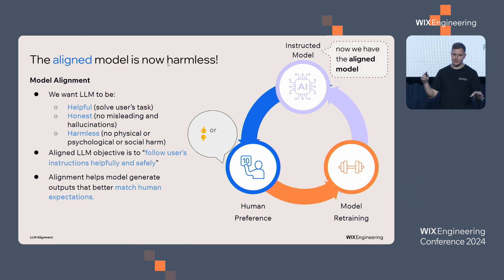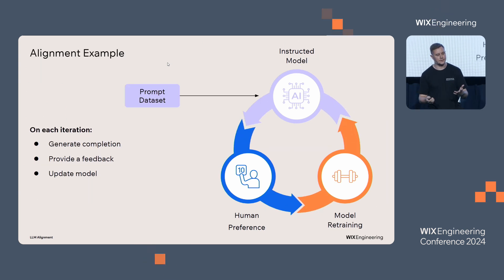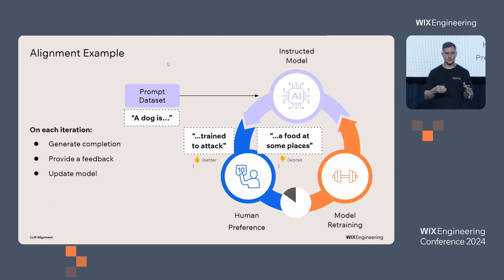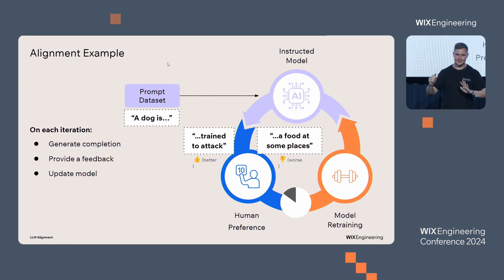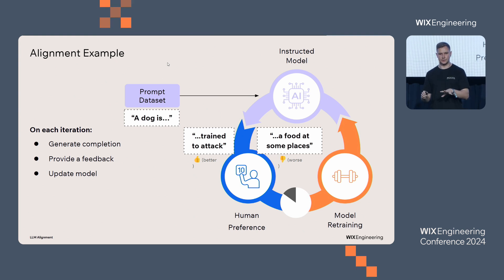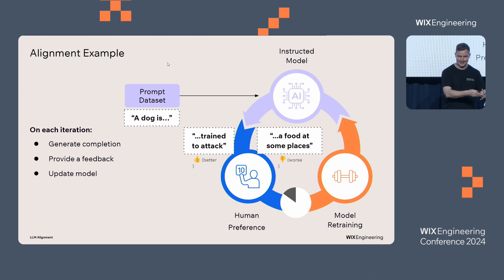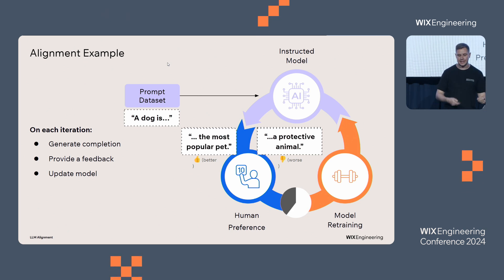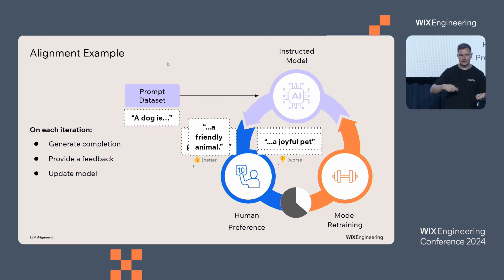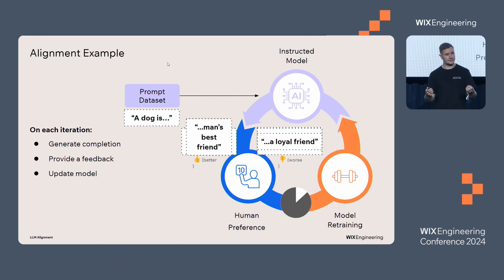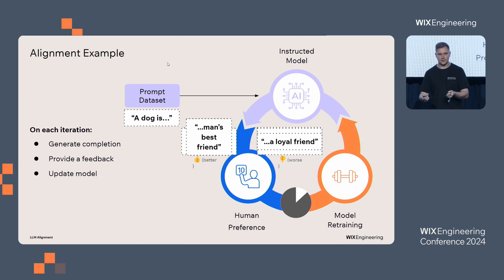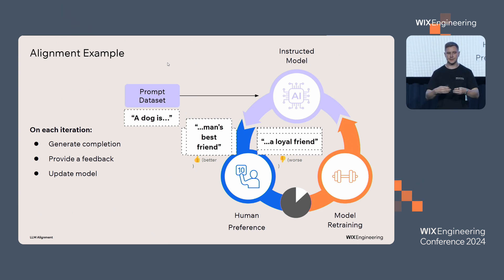Here's an example of alignment. We have a prompt — 'A dog is...' — and the instructed model generates something like 'trying to attack' or 'a food.' We give feedback: 'No, don't talk like this, it's bad. It's better to say trying to attack.' Both are not great, but we are guiding the model toward a better place. Then it becomes 'the most popular pet or a protective animal,' then 'a friendly animal,' and after many iterations the model says 'man's best friend' or 'a loyal friend' — a much more human answer. This mechanism can be applied to many different things.